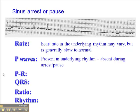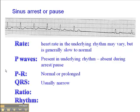P-waves are present in the underlying rhythm, but they'll be absent during the arrest or pause. Here we see a sinus rhythm underlying, and here we see the absence of P-wave altogether — just a pause before another beat happens. The PR interval in the underlying rhythm may be normal or prolonged, the QRS is usually narrow, the ratio in the underlying rhythm is 1-to-1, and the rhythm is irregular.